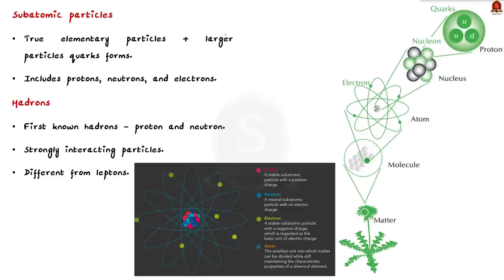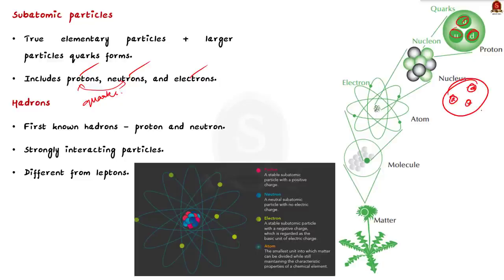The three main subatomic particles that form an atom are proton, neutron, and electron. Here, protons and neutrons are made up of quarks only. A proton consists of two up quarks and a down quark, and the neutron consists of two down quarks and an up quark. So these are the larger particles formed by quarks.